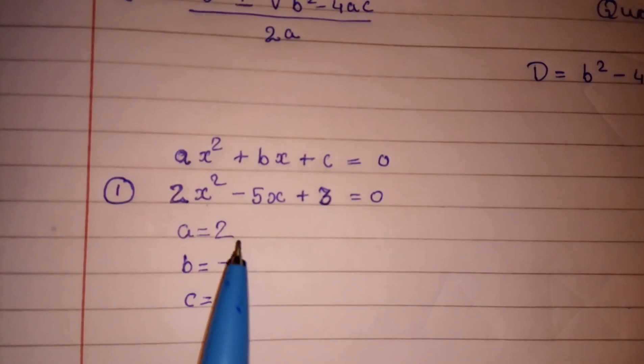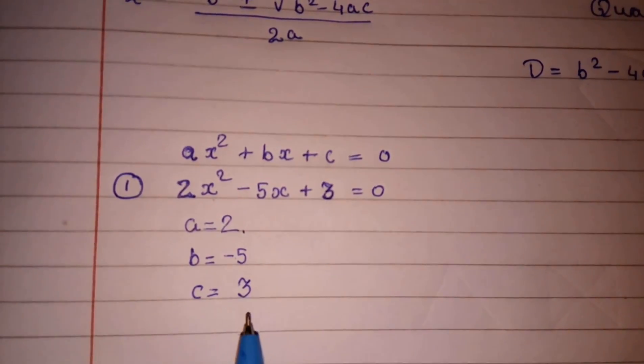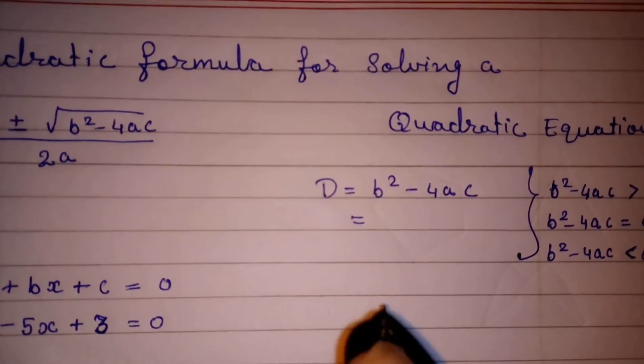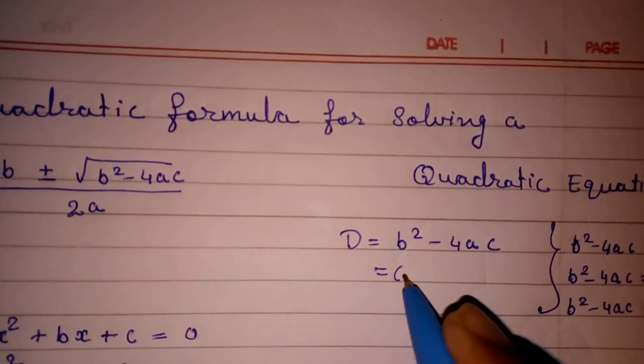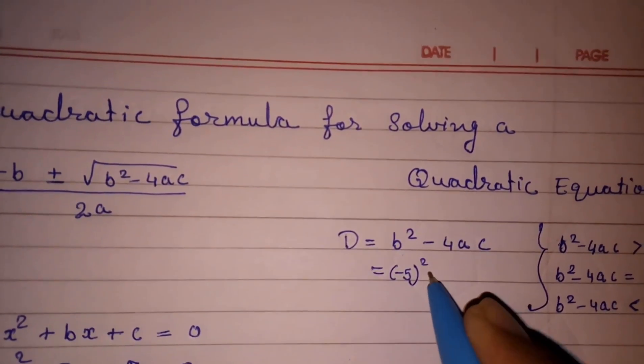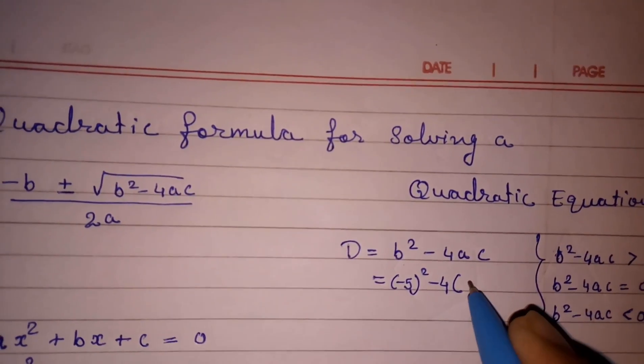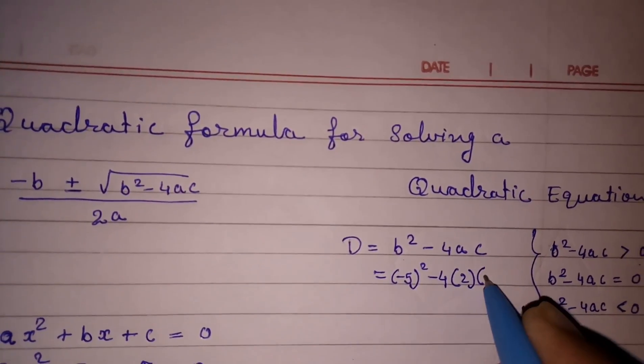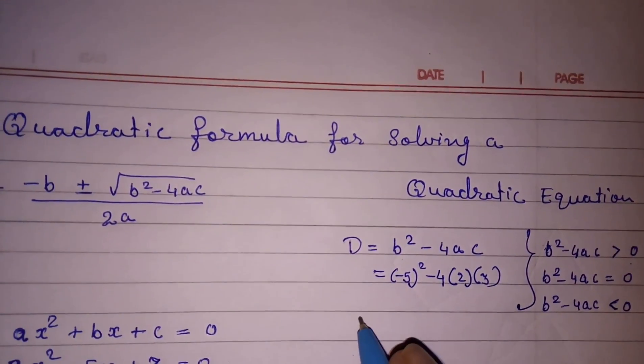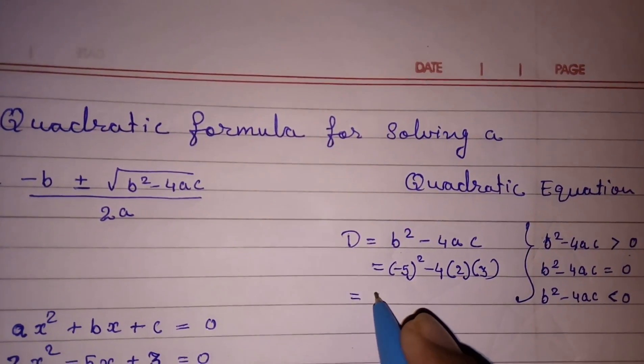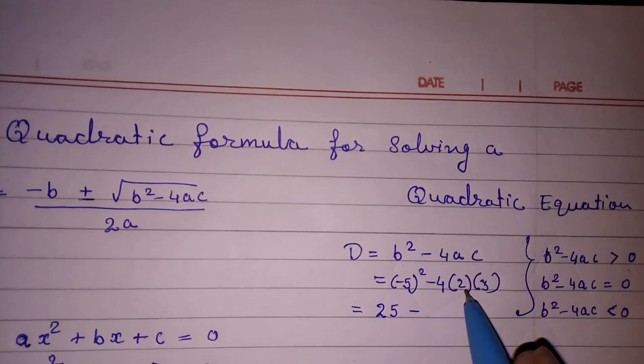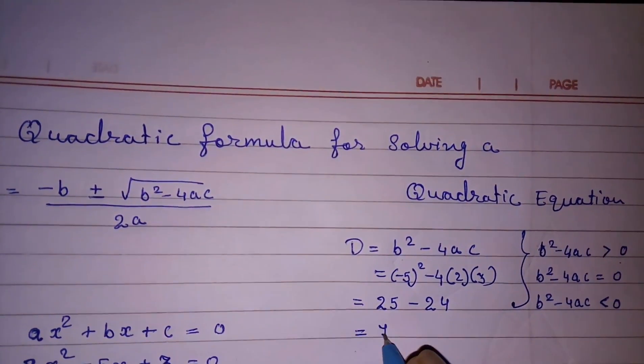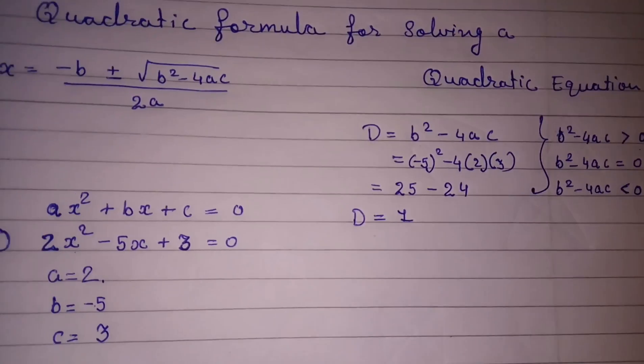First we will see here. a = 2, b = -5 and c = 3. So now putting in this, first we will find discriminant. So (-5)² - 4 × 2 × 3. Square of -5 is 25. Minus 4×2 is 8×3 is 24. So D = 1. So we got D = 1.